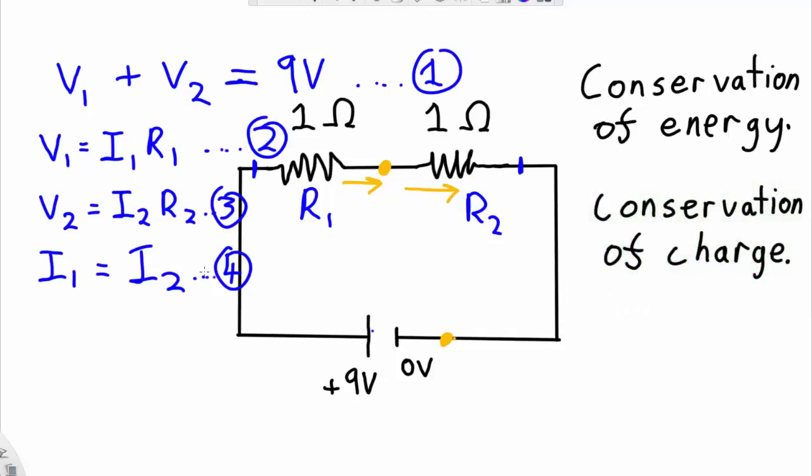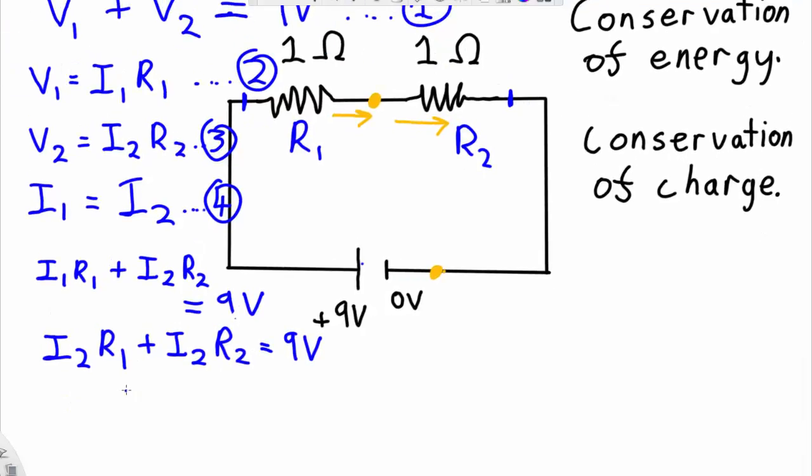So now I have a series of 4 equations. I can use all these equations together to find the current that's flowing through the circuit. So, first of all, I'm going to substitute equation 2 and equation 3 into equation 1. And now, I'm going to substitute equation 4 to get rid of I1. So now, I can rearrange this to solve for I2.